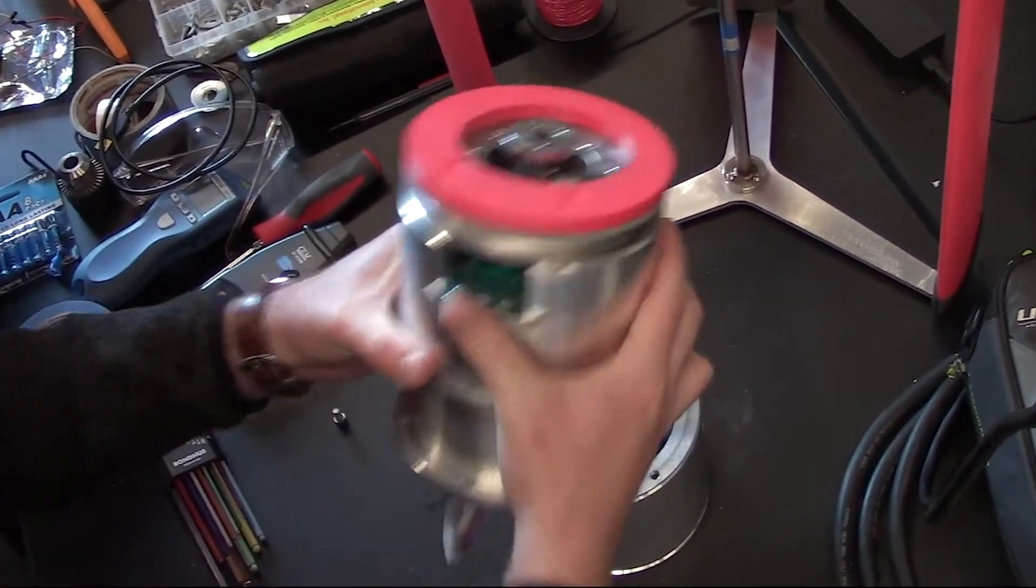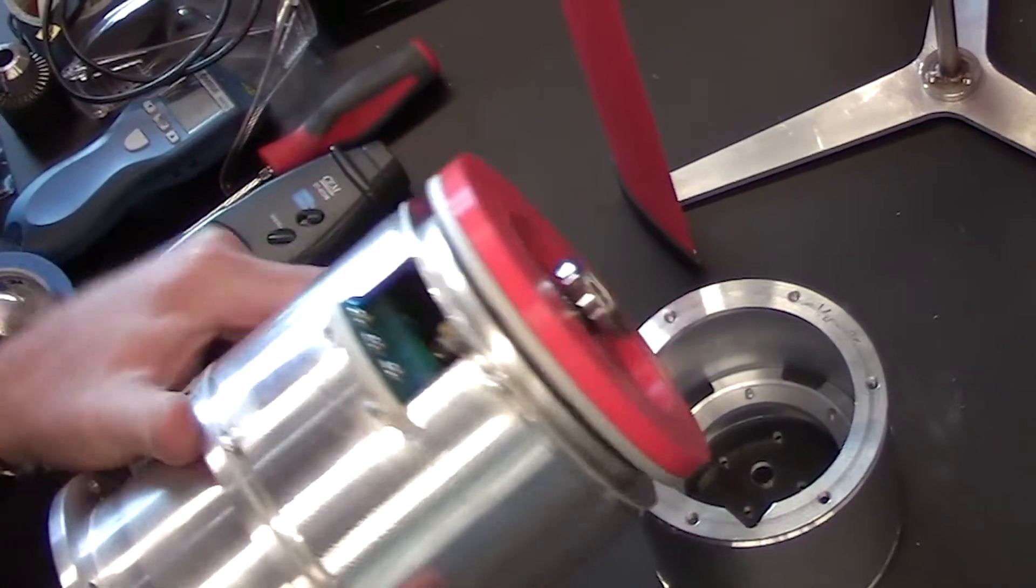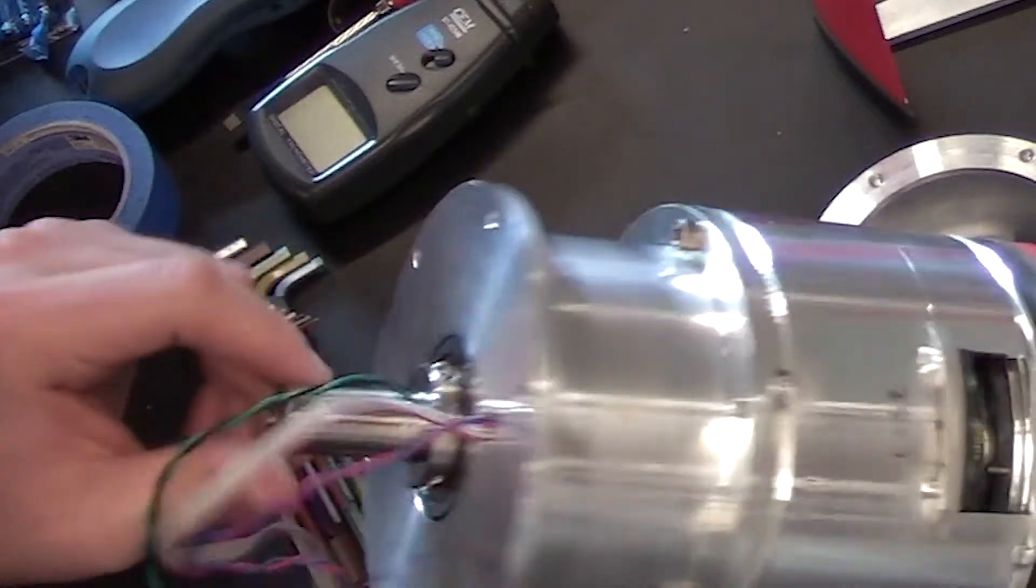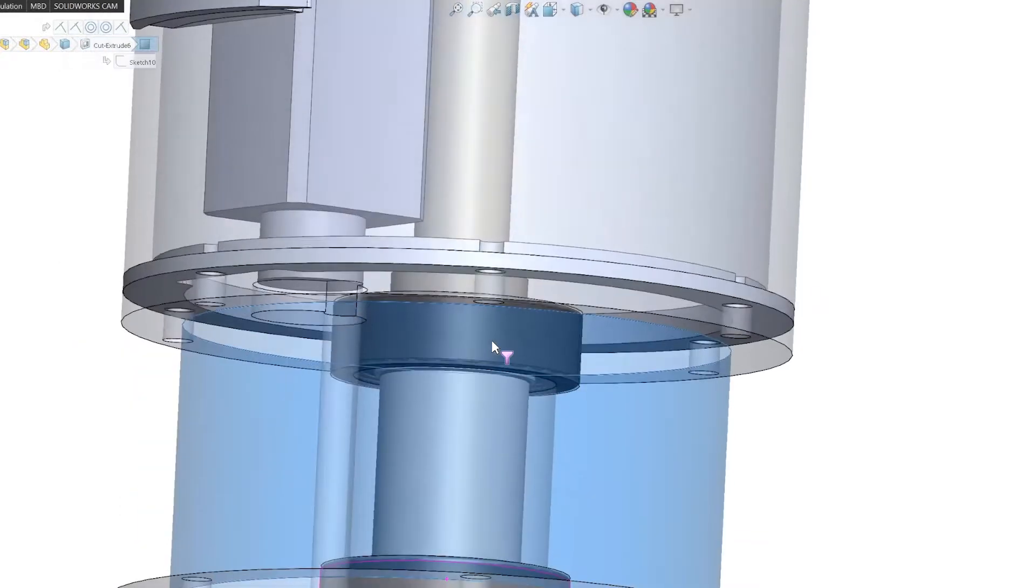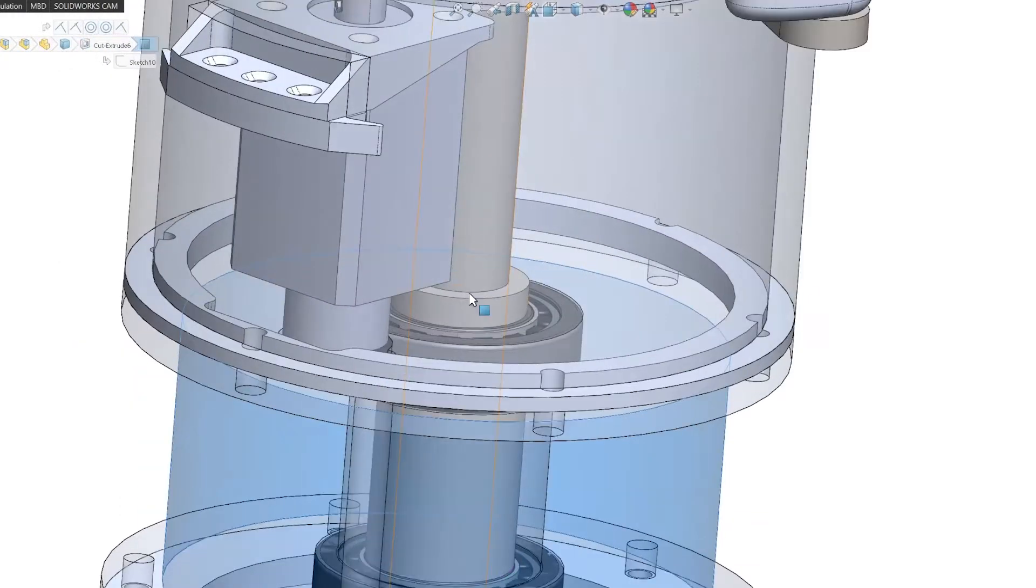The shaft goes through this section which has the motor in it, and then this section has these two bearings which the shaft spins on. There's two bearings, one here and one here, and then the shaft just goes through it.